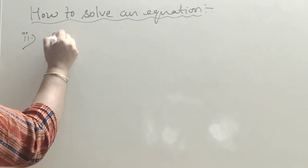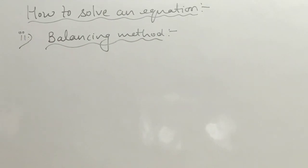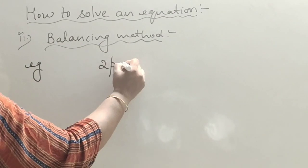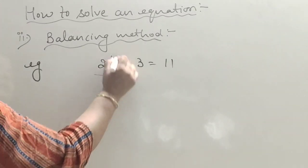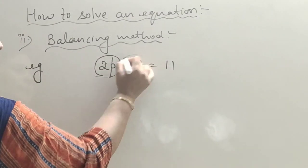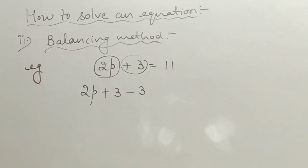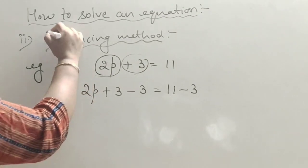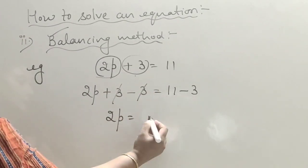The second method is the balancing method. For example, 2p plus 3 is equal to 11. In this method, we separate the variable term. To remove plus 3 from the left-hand side, we subtract 3 from both sides — left and right. This cancels the 3 on the left, giving us 2p equals 11 minus 3, which is 8.